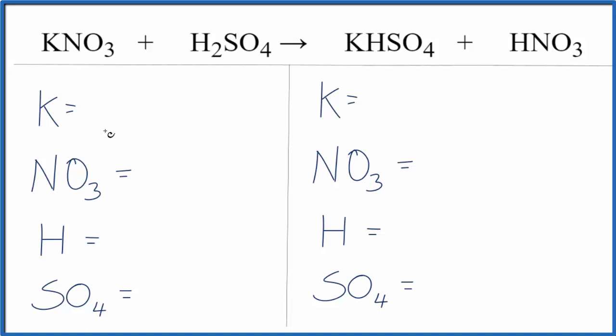So let's count the atoms up on each side of the equation. We have one potassium, and then NO3. That's the nitrate ion. We have one of those. Hydrogen, we have two. And then this SO4, since we have one here, and we have SO4 here, we can just say we have one SO4.